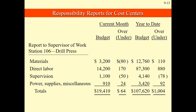If overapplied or overabsorbed, that's favorable. If underapplied or underabsorbed, that is unfavorable. So over is positive for the variances, and underapplied is negative. Variances, by the way, is the difference between the actual and the budgeted amounts or figures.